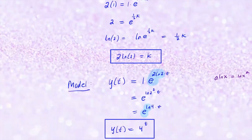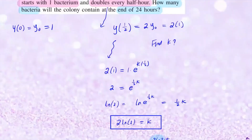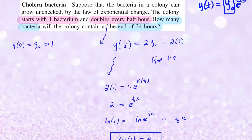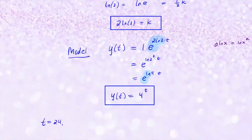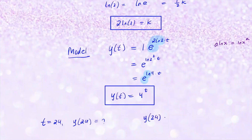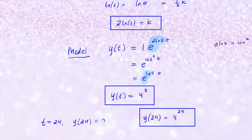Now that we have our model, let's answer the question. We want to know how many bacteria there will be at the end of 24 hours. So when t equals 24, we want y of 24, which equals four to the power 24 — simply plugging in 24 for t. That will give you the amount. Since I don't have a calculator, I'll stop here, but if you do, simply plug in four to the power 24 to get the number of bacteria after 24 hours.